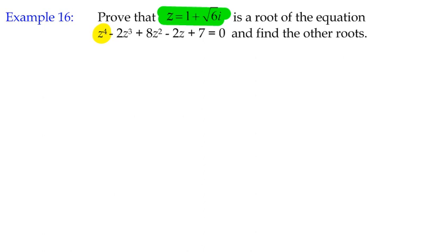For this example with the quartic equation, since we already know there's one complex solution, there are at least two complex solutions. The other two might be real, or there could be four complex solutions and no real solutions. The number of complex solutions must be even because they pair up as a complex number and its conjugate — so there are only two scenarios: either two or four complex solutions.